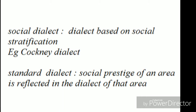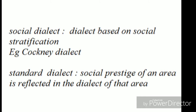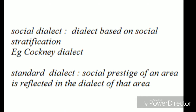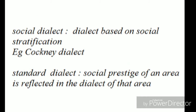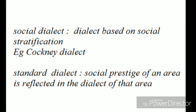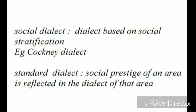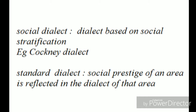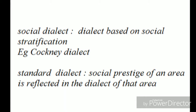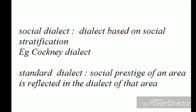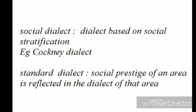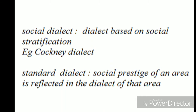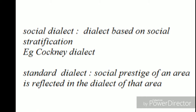The next type is social dialect — a dialect based on social stratification is called social dialect. For example, in Shaw's Pygmalion, the flower girl Eliza used the Cockney dialect, which is used by lower-class people living in London. Next is standard dialect — the social prestige of the speakers of a highly educated region is transferred to the dialect, and such a dialect is called standard dialect. In other words, it is a variety spoken by people who are politically, socially, and economically powerful.